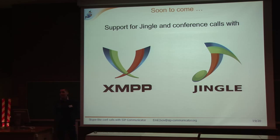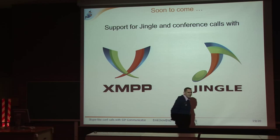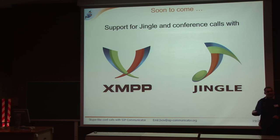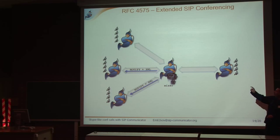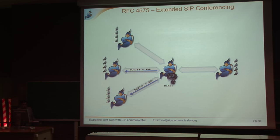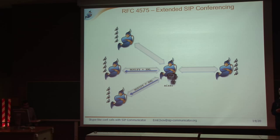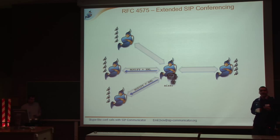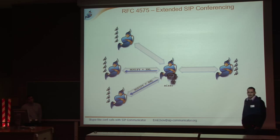We have a couple more minutes, so if anyone has any questions, I'd be glad to answer. There is a field defined by the RFC 4575 that allows you to map a SIP URI to an SSRC number. You're not supposed to use ZRDP to actually encrypt SIP signaling — you do that normally using TLS, and SIP Communicator supports that. So you can have a completely secure call establishment and call scenario with SIP Communicator.